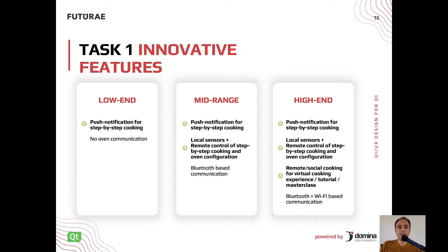We sorted out the main features an oven should have and introduced some innovative features to show how Qt could help in prototyping them. For push notifications: in the low end they come through the companion app; in the mid range, they are provided by the oven for step-by-step cooking and configuration via Bluetooth; and in the high end, Wi-Fi-based communication also enables connection with other devices and internet browsing.